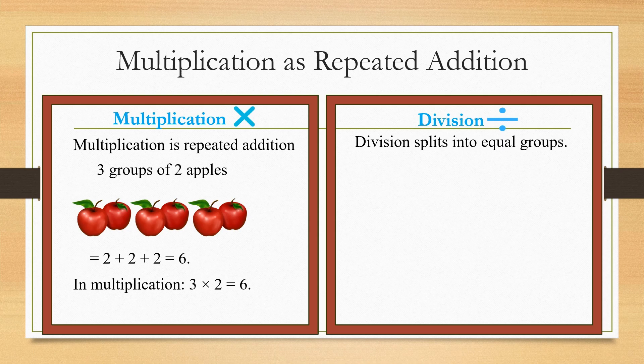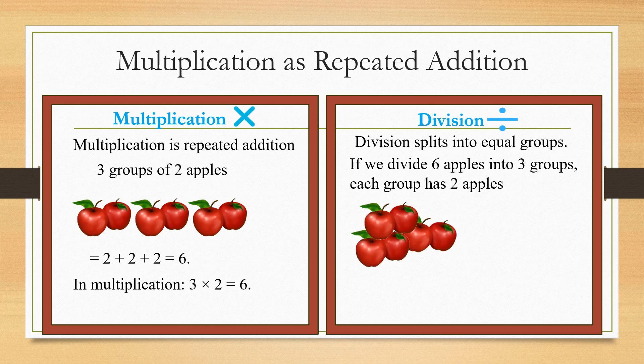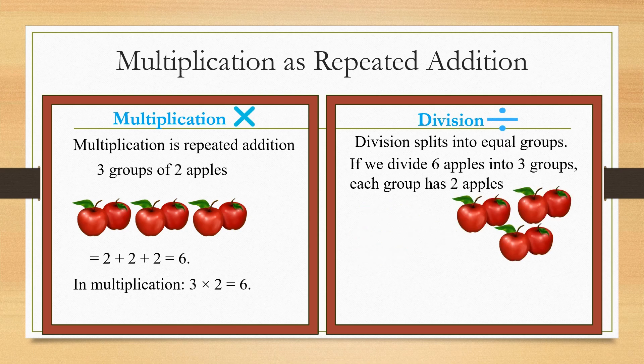Division splits into equal groups. If we divide six apples into three groups, each group has two apples. Here there are six apples divided into three groups, so each group will have two apples.